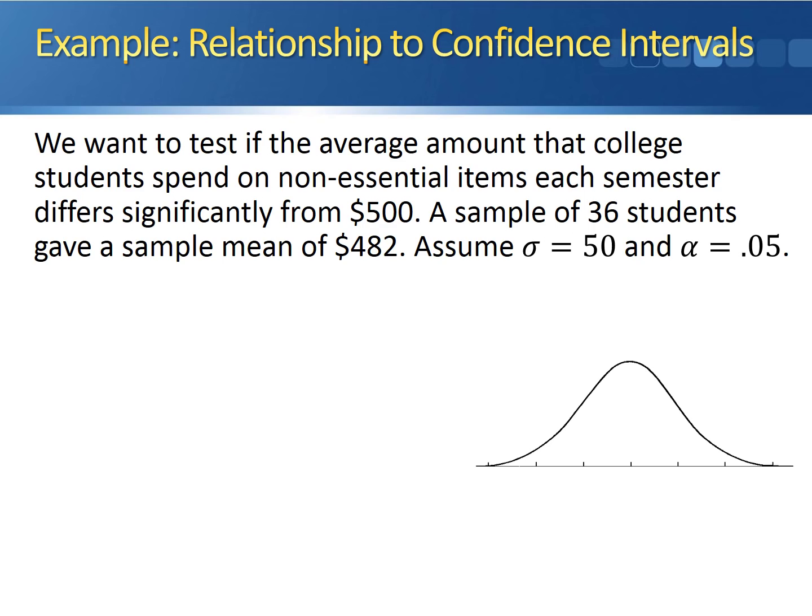A random sample of 36 students gave a sample mean of $482. Assume that the population standard deviation is $50, and that we want to do this test at the 5% level of significance.